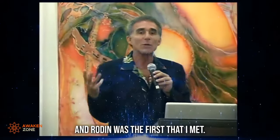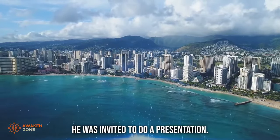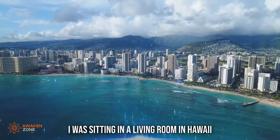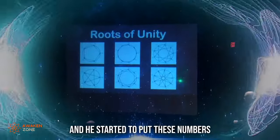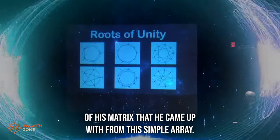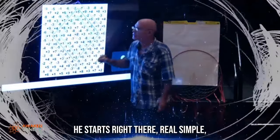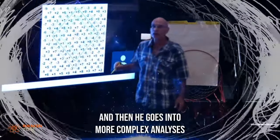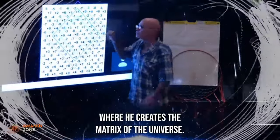And Rodin was the first that I met. I had never known him before. He was invited to do a presentation. I was sitting in a living room in Hawaii, and Rodin was there presenting with other physicists and mathematicians, and he started to put these numbers of his matrix that he came up with from this simple array. He starts right there, real simple.